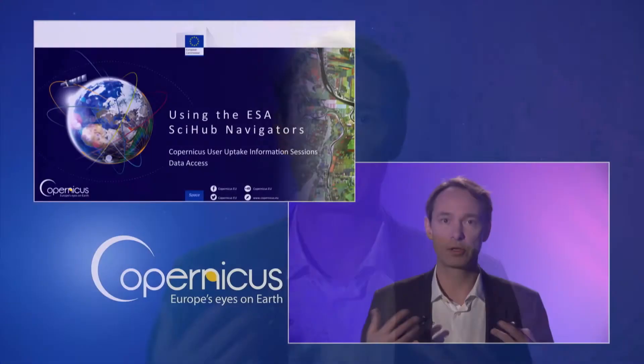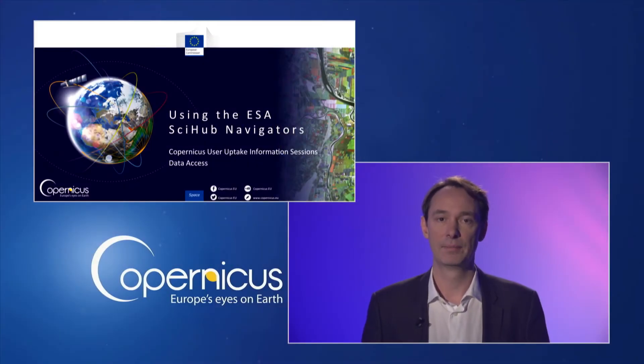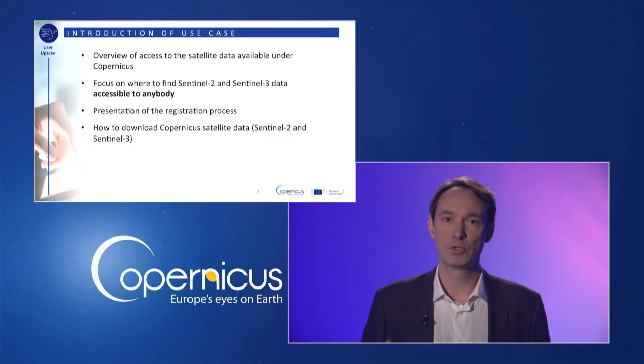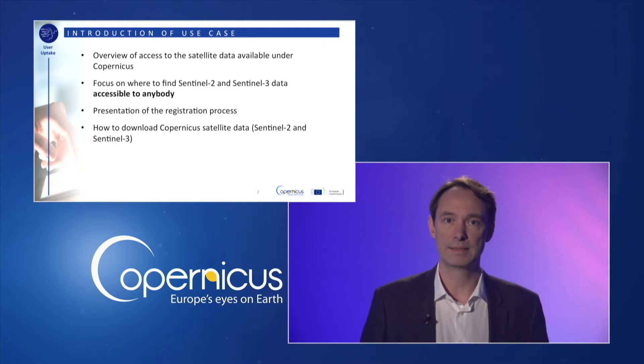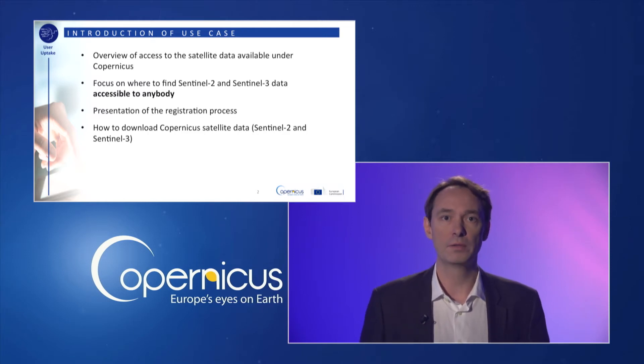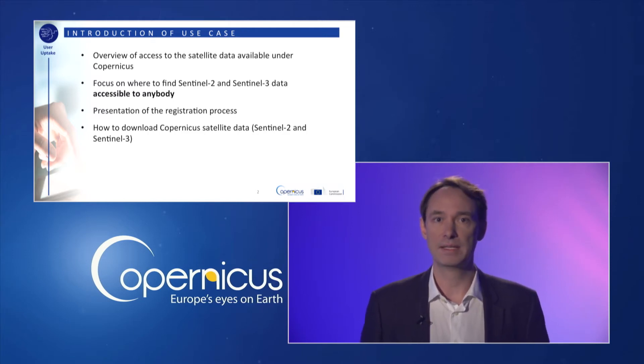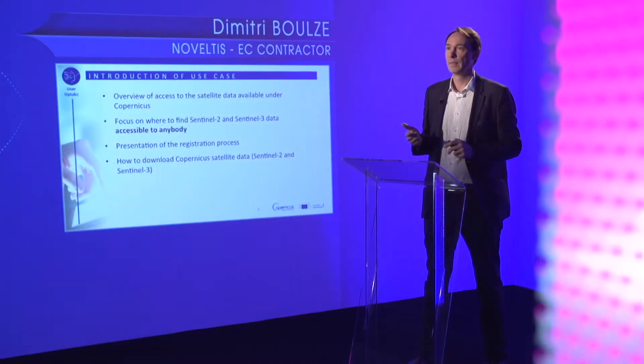In this module, I will show you how to use a catalog browser to download satellite data. The objectives of this sub-module are to provide you with an overview of access to the satellite data available under Copernicus, focus on where to find Sentinel-2 and Sentinel-3 data accessible to anybody, a presentation of the registration process, and finally to show you how to download Copernicus satellite data with a focus on Sentinel-2 and Sentinel-3.